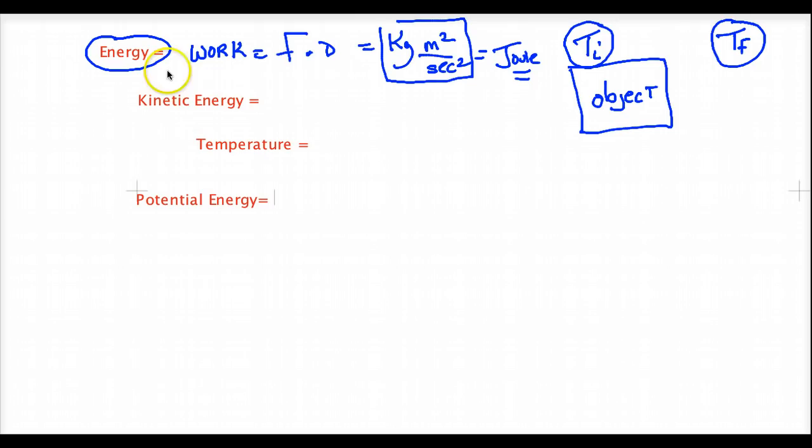Kinetic energy is, if we haven't already remembered, the energy of motion. Kinetic means motion. So it's the energy of motion. If molecules move faster, they have more kinetic energy. Temperature is underneath kinetic energy because this is the average kinetic energy. And the reason why we need an average is the molecules have a range of motions.